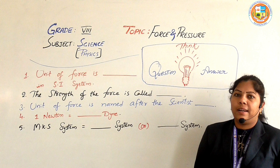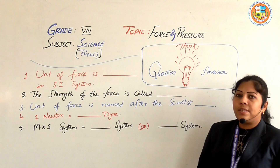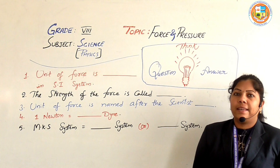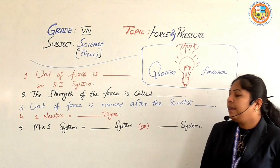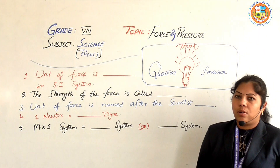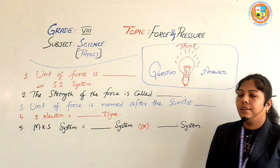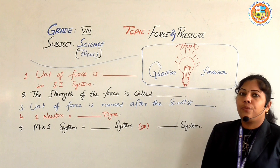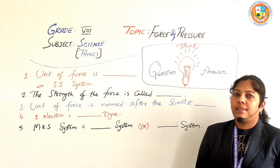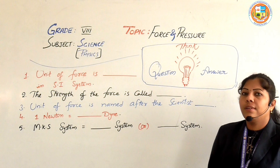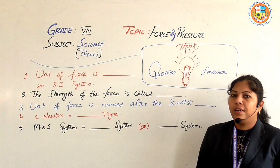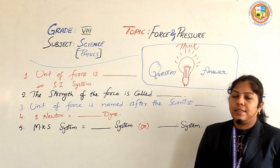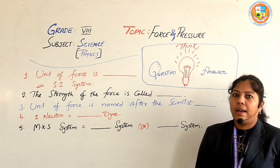Now it's time to think and answer. First question: the unit of force in the SI system is dash. Second question: the strength of the force is called as dash. Third question: the unit of force is named after the scientist dash. Fourth: one Newton is equal to dash Dynes. Fifth: MKS system is also called as dash system or dash system.